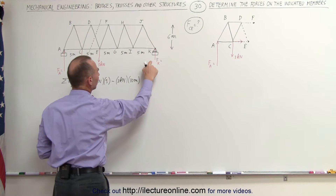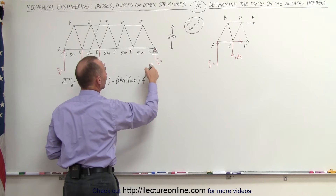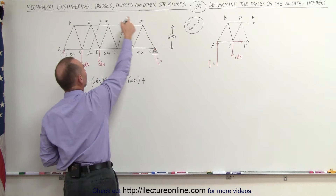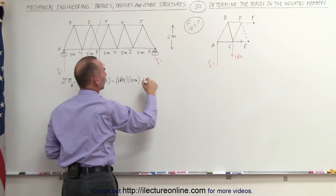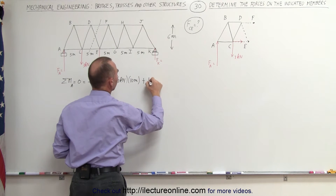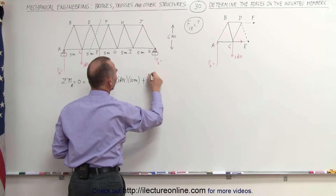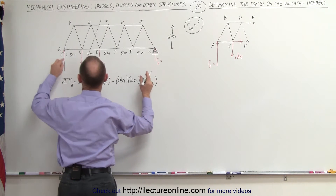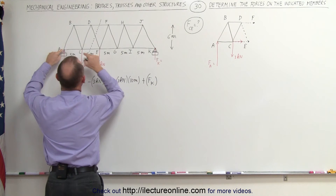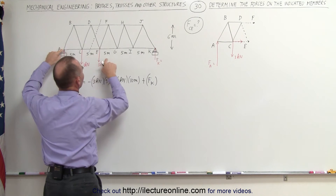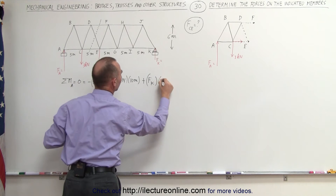And finally, we have this force which will be plus, because it gives counterclockwise rotational motion — that is F sub K — and the total distance from the point of rotation to where the force acts is 5, 10, 15, 20, 25 meters.